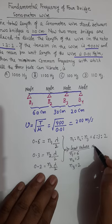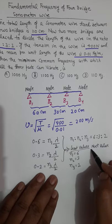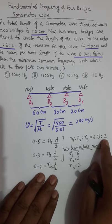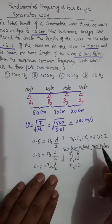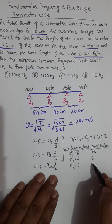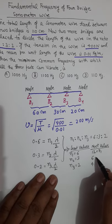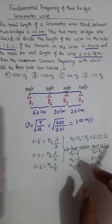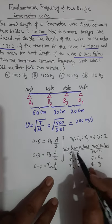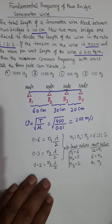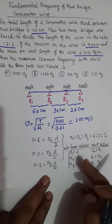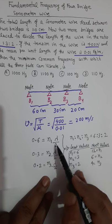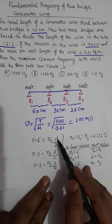The next possible values — though not required in this question — would be n₁ = 12, n₂ = 6, n₃ = 4, and so on. But since we need to find the minimum frequency, we consider the minimum values of n₁, n₂, n₃. Substituting these minimum values into any of the three equations allows us to find the value of λ.